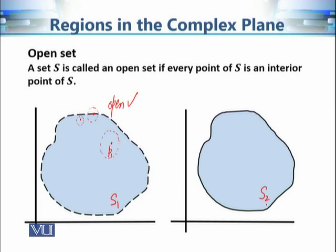Now let's consider S2. Whenever I choose a point in the blue region I can find a small epsilon neighborhood contained in S2. But the difference from S1 is that the boundary points are also included in S2. So if I choose a boundary point Q and any neighborhood of Q, that neighborhood is not going to be contained in S2 — Q is not an interior point. Q belongs to S2 but is not interior, so this set is not open.